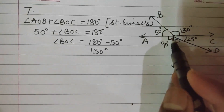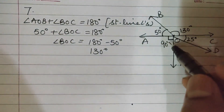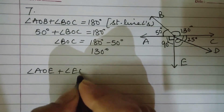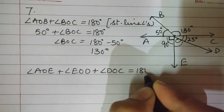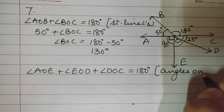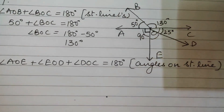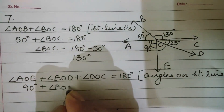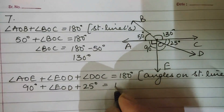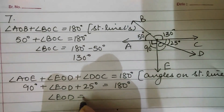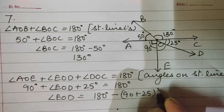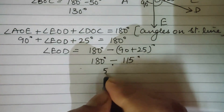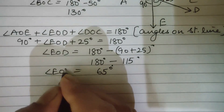Now find angle EOD. Since AOC is a straight line, the sum of all angles on it equals 180 degrees. So angle AOE plus angle EOD plus angle DOC equals 180 degrees. Substituting: 90 plus angle EOD plus 25 equals 180 degrees. Angle EOD equals 180 minus 115, which is 65 degrees.